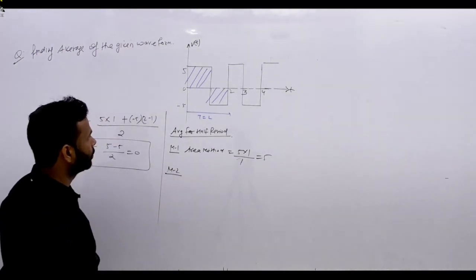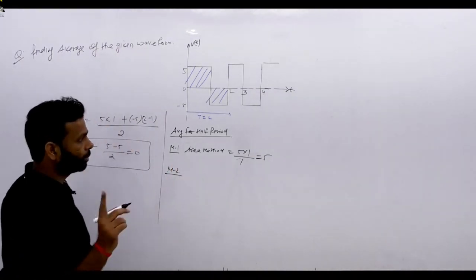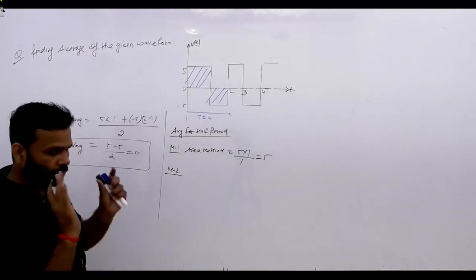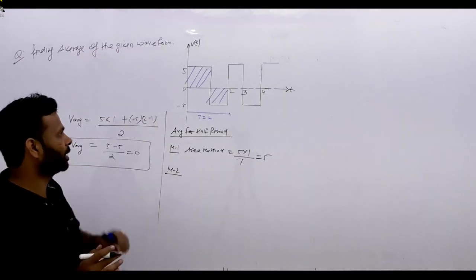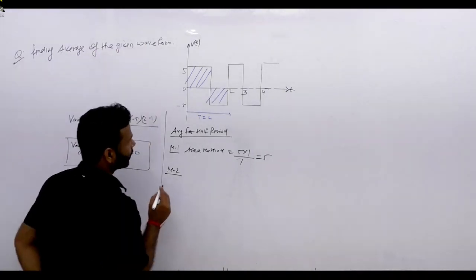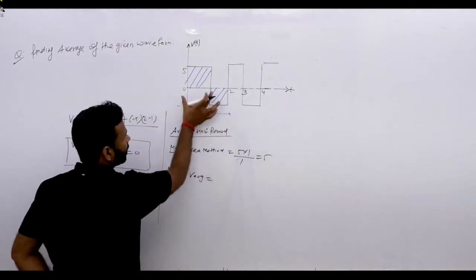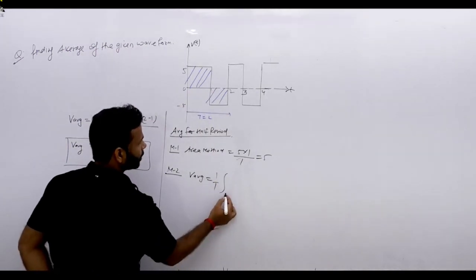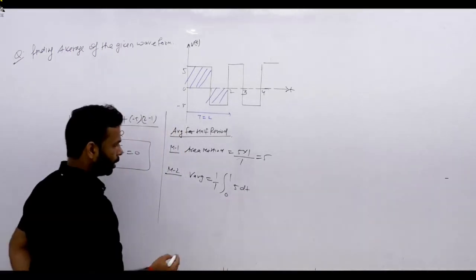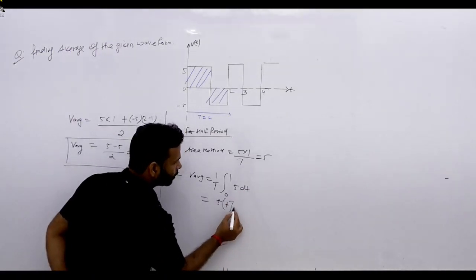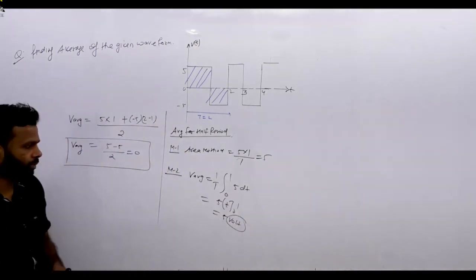In the previous question we were putting time period 2 but calculating average RMS for the half period — that's why we were getting the wrong answer. Here we put 1/T, and since we're calculating for the half period, it is 1 by 1, integrated from 0 to 1 of 5 dt. Applying this gives 5. So the missing term was the time period.